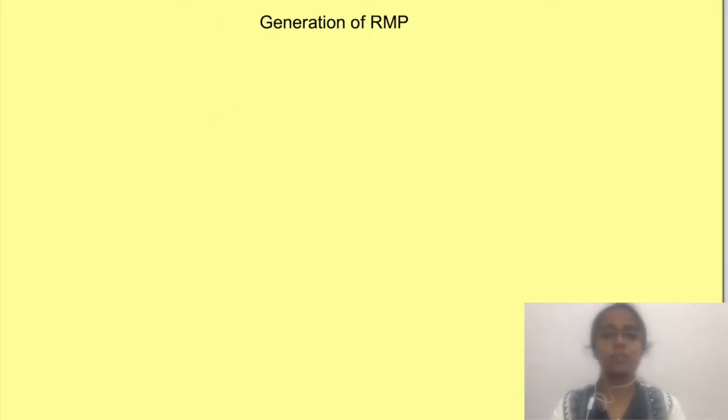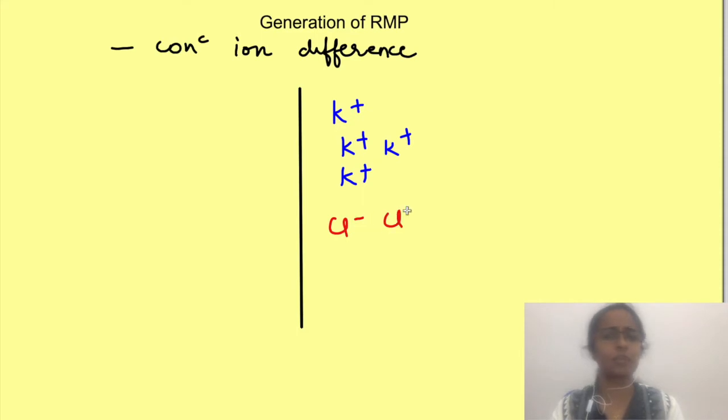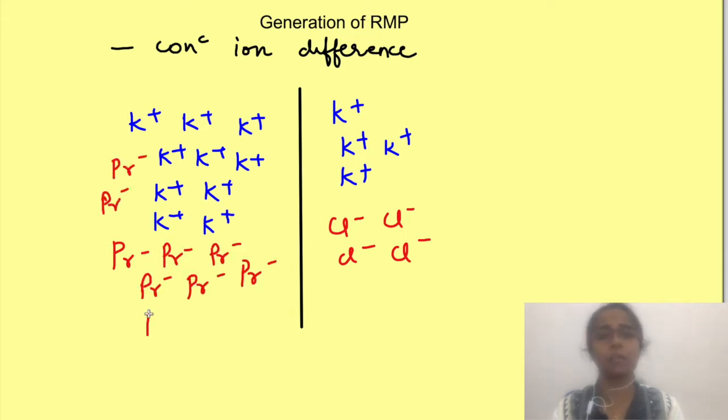Well, generation of resting membrane potential requires three things. One, there should be difference in concentration of ions on two sides of the membrane. So say this side we have four positive and four negative ions, say potassium and chloride, and this side we have these 10 positive and 10 negative ions, again say potassium and negatively charged proteins.